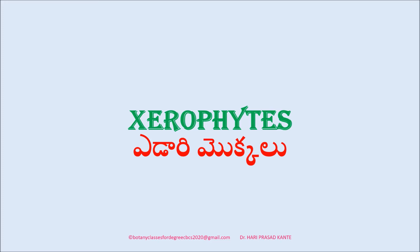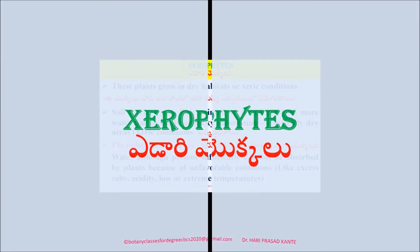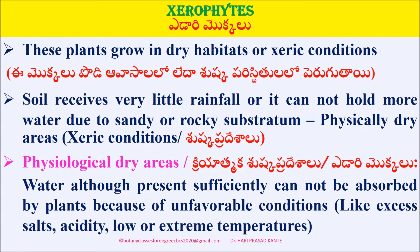What are the types of xerophytes? These plants grow in dry habitats or xeric conditions. Here, soil receives very little rainfall.